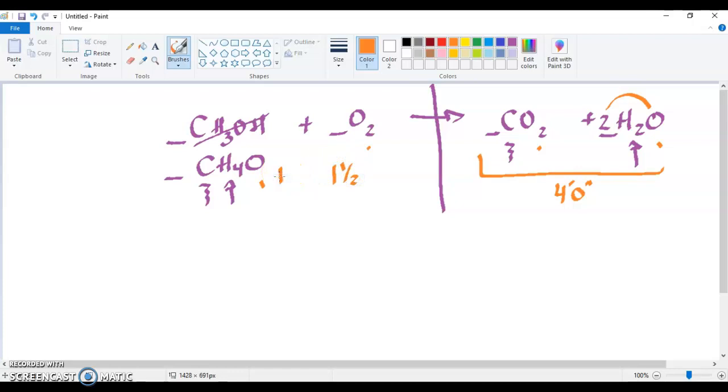This ratio, one to one and a half, to one to two, is correct, but most scientists recognize that a half a molecule makes no sense. So when we double everything, two to three to two to four, it becomes completely balanced.